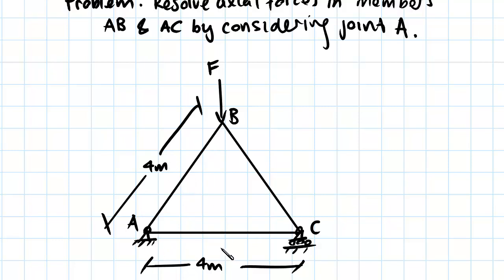You can see that the two members that connect A to anything else are this member here and this member here. The way we denote them when we're looking at trusses is we just denote them by where they start and where they end.